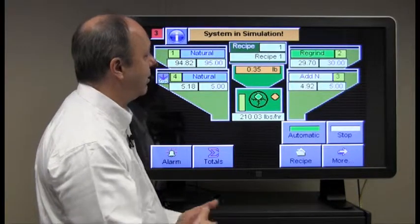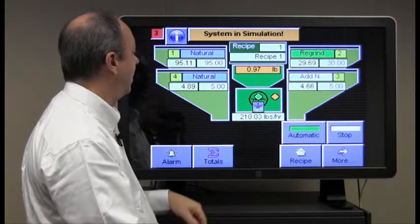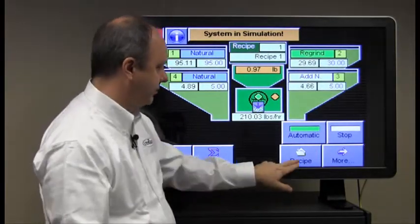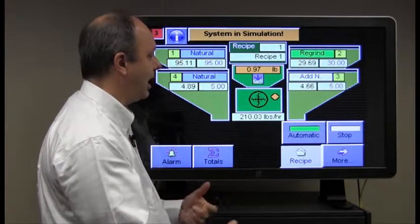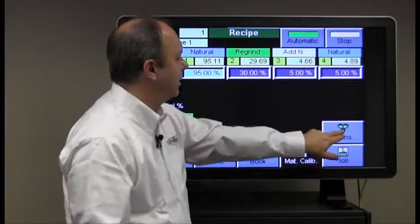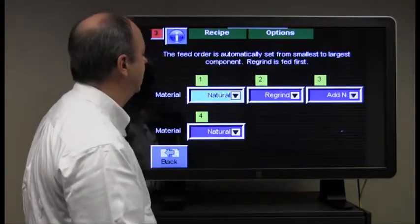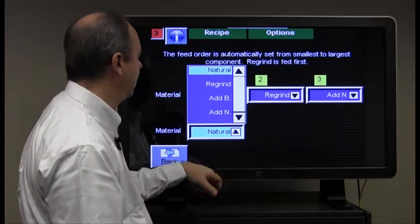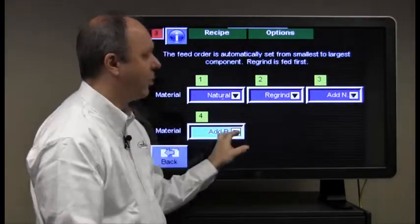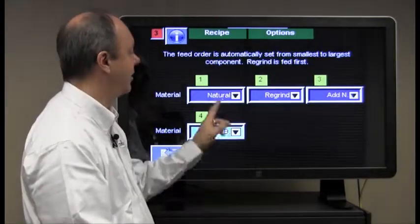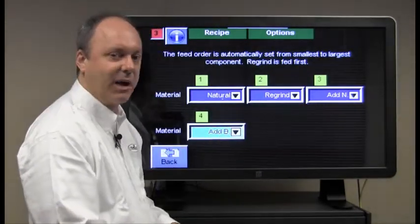So the final option for adding materials into the system we'll do on component 4, we can return to the recipe screen, go into options and we'll select for component 4, we'll change it from a natural to additive batch. So now you can see we have all four material types in this particular blend. We have a natural, we have a regrind, we have an additive natural and an additive batch.